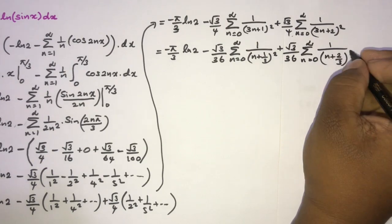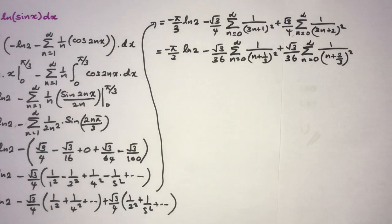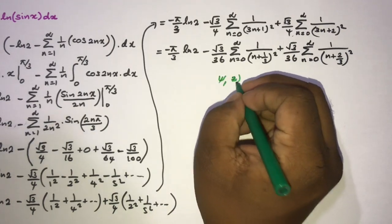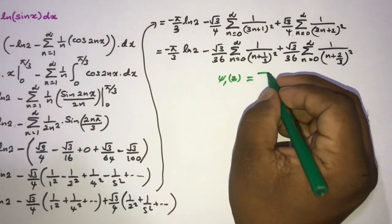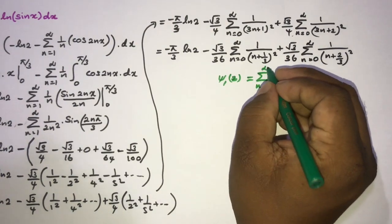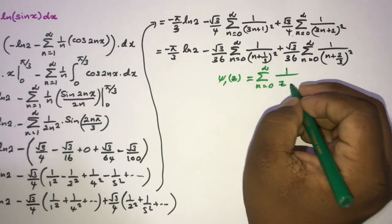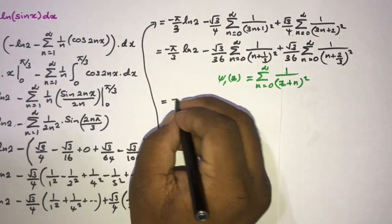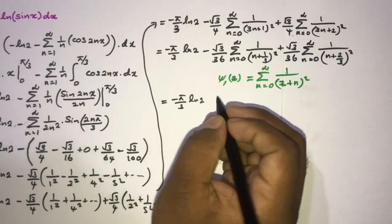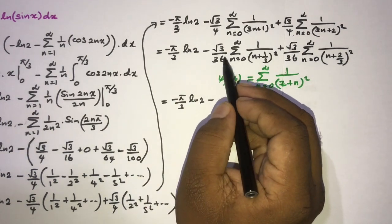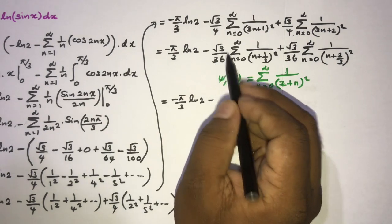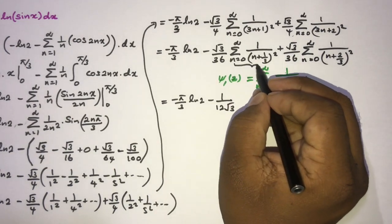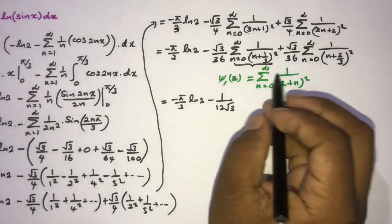We will now use the trigamma function. We know the trigamma function can be represented as an infinite series: ψ₁(c) = sum from n=0 to infinity of 1/(c+n)². So we can write this as minus (π/3) ln(2) plus (1/12√3) times the trigamma expressions.